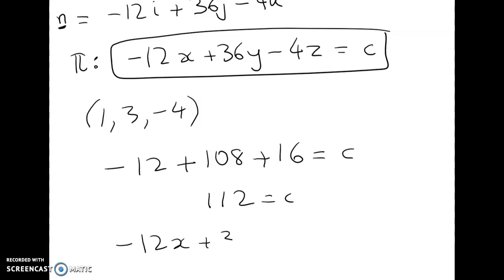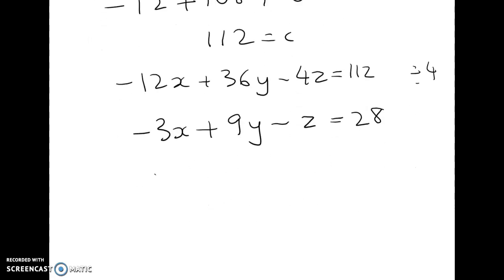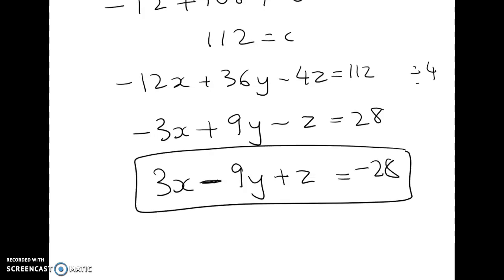So we could write our equation of the plane like this. But it would be nicer to get rid of the common factor of 4. So dividing everything through by 4 gives me -3x + 9y - z = 28. Or, even more nicely, multiplying through by -1 gives me 3x - 9y + z = -28. So I think that's the nicest way to write it, but that would get a tick, and so would that one there.